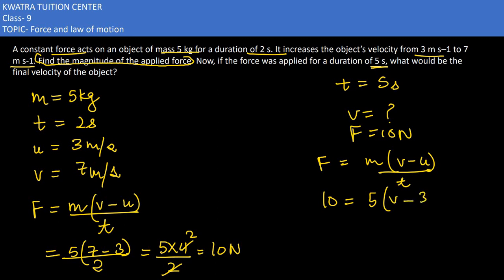u in this case is 3, divided by time. Don't take 2 seconds, it is the new time which is 5. 5 and 5 would be cancelled, so we are left with 10 equals v minus 3.